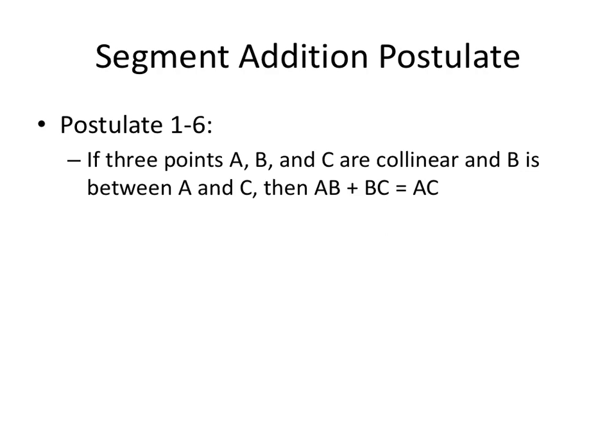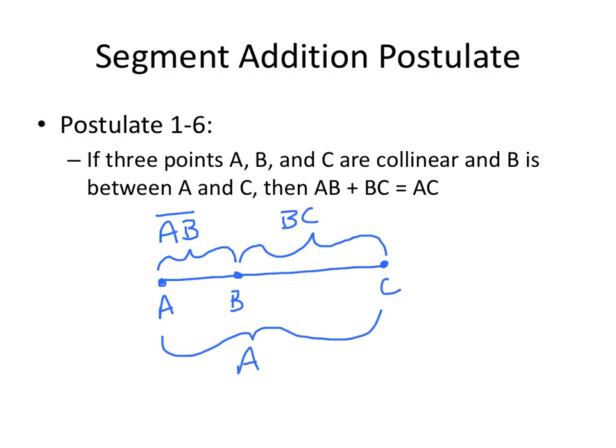And here's what this looks like. If we have a line and we've got A and B and C on it, then this segment length of AB plus the segment length of BC is equal to the segment length of AC. And that really kind of makes sense. But it's a really handy postulate and I'll show you how we use it more on the next slide.